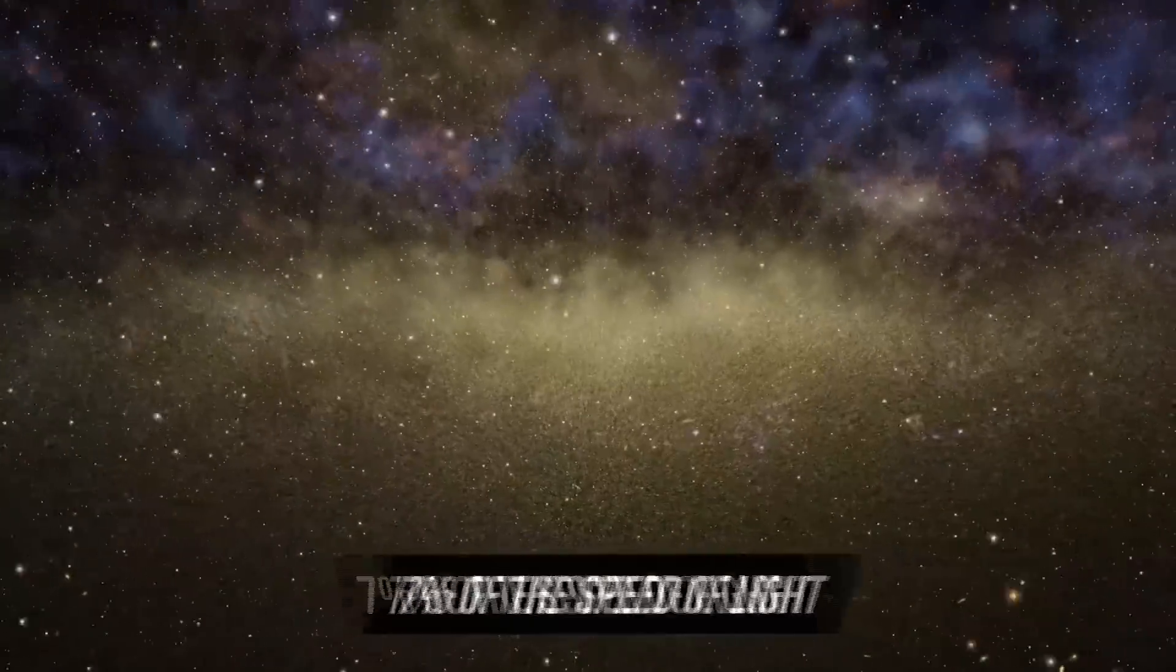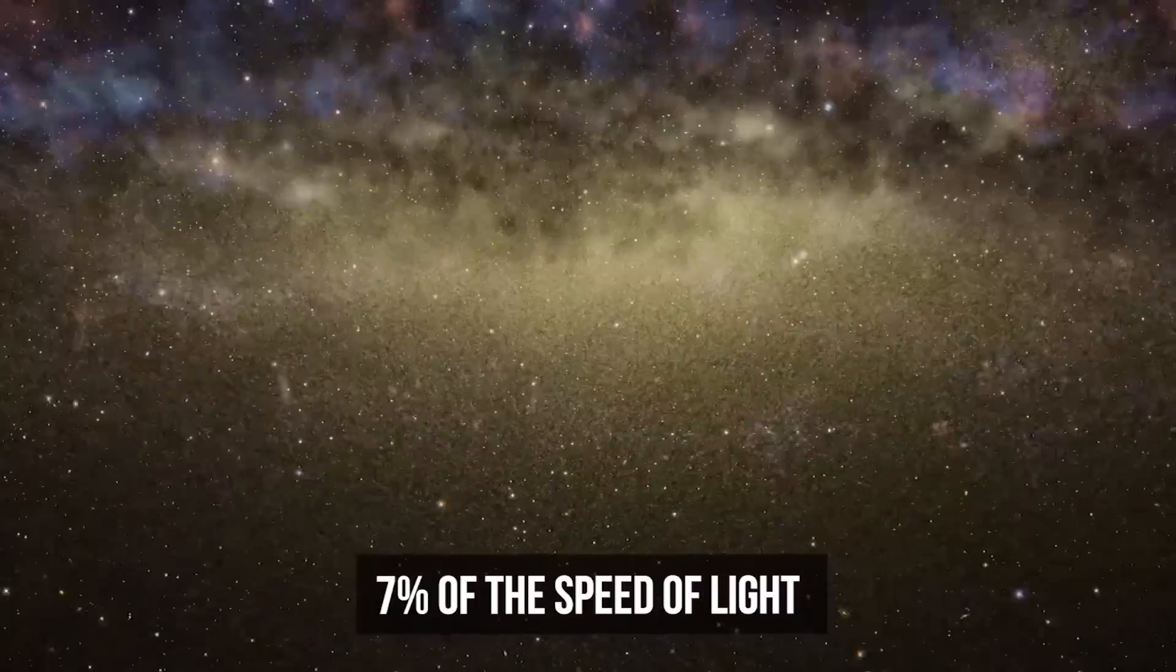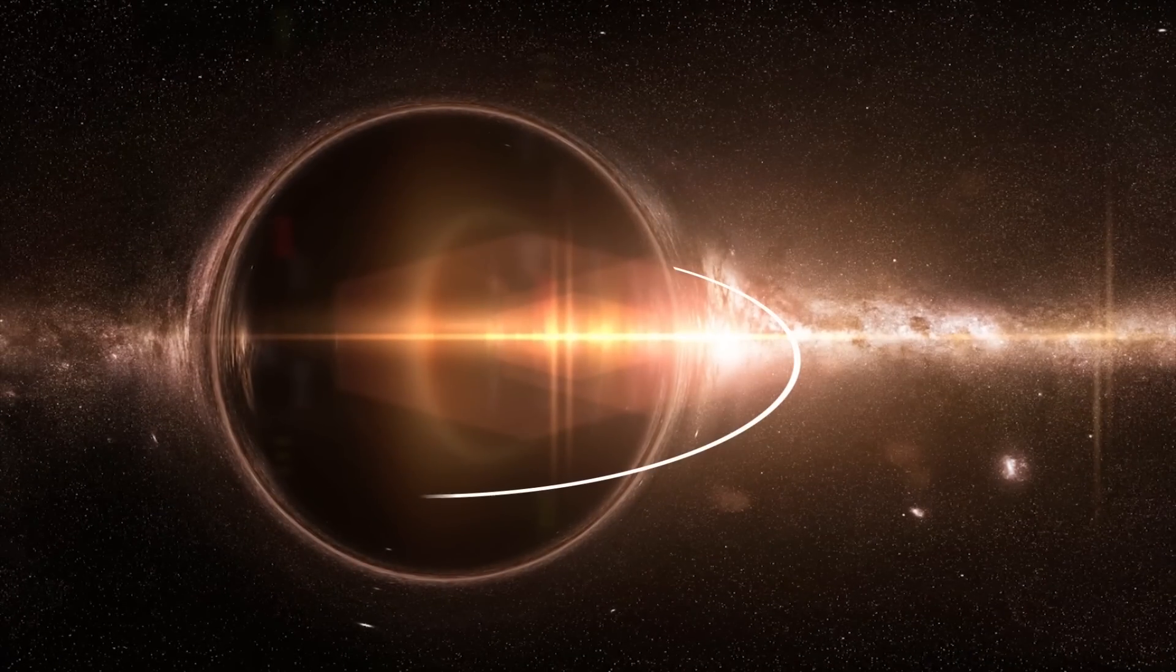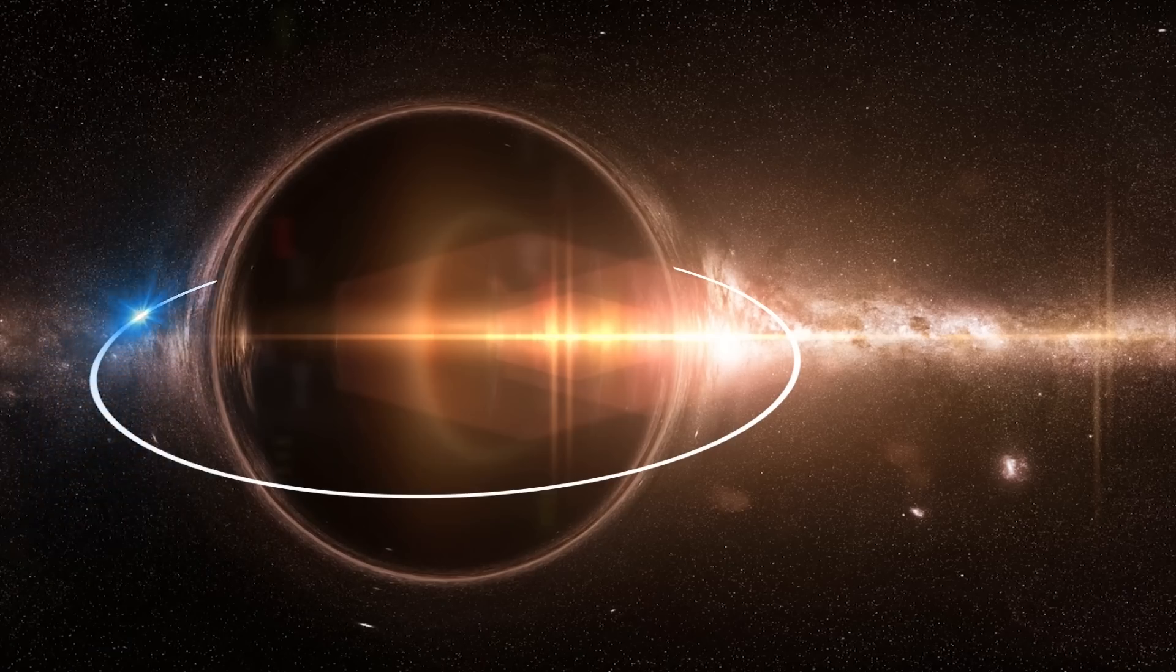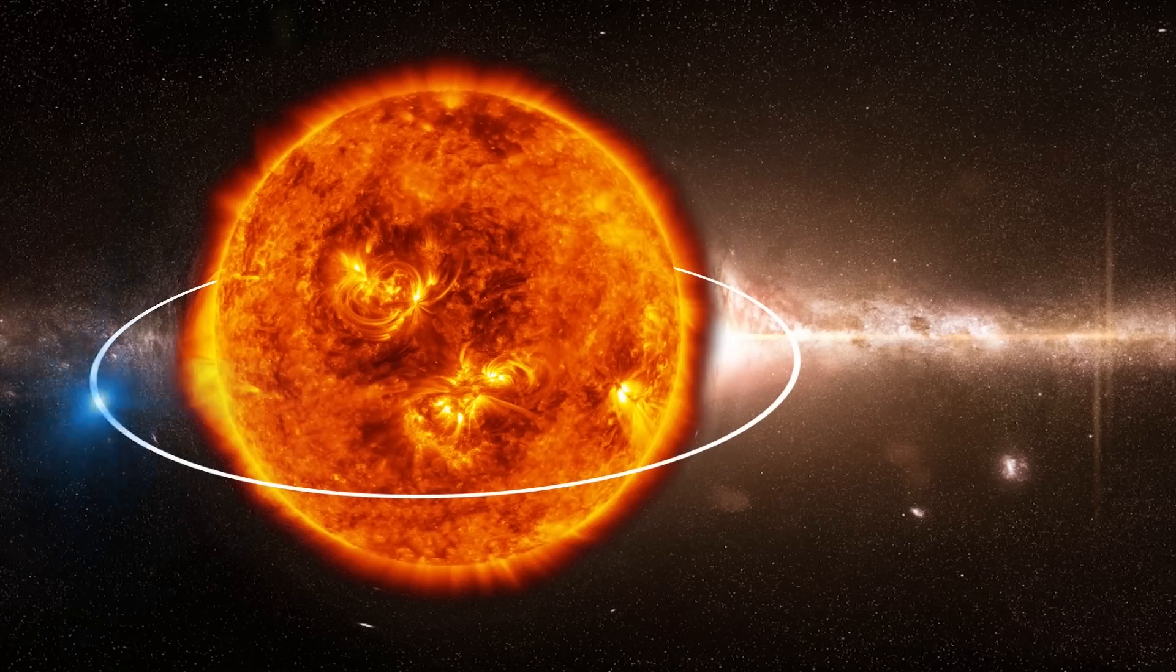Despite this, its speed reaches 7% of the speed of light. S4711 needs only seven and a half years to complete one revolution around the supermassive black hole. Traveling at such a speed, this star would make a full circle around our Sun in less than a day.